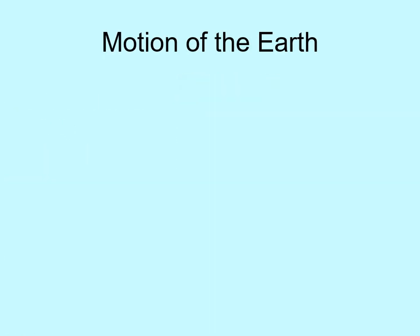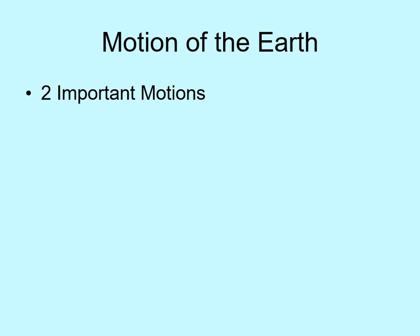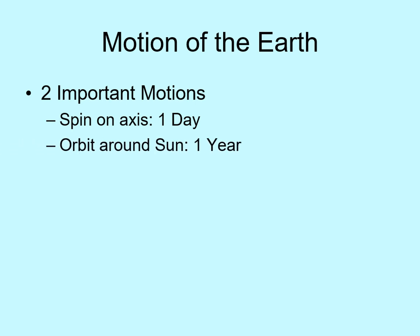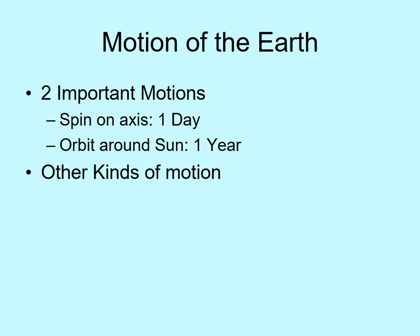Let's start with the Earth's motion around the Sun. There are two important ways the Earth moves. It spins in 24 hours — this defines our day. It also travels around the Sun in 365 days, which is what defines our year. We'll look at these two in a lot more detail, but I should mention that these are not the only ways the Earth is moving.